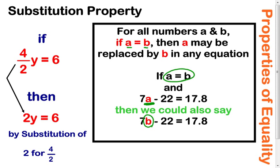So there's the one example there. When you come over here, we started with this equation that says 4 over 2y equals 6. Well, all we're going to do is we're going to take this 4 over 2. That's equal to 2. So we can replace the 4 over 2 with 2 because those two things are equal. Another example of substitution.